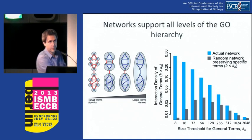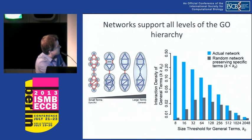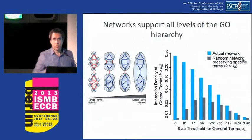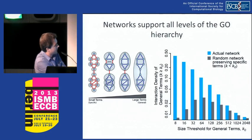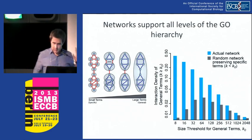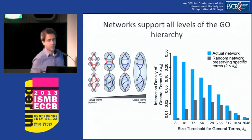What we see is that preserving the smaller terms does preserve some of the density for the larger terms, but not all. We looked at the difference between the observed and the corrected baseline — that's the contributed density at any given level of the ontology. For us, this is evidence that there is considerable, significant interaction density at any level of this hierarchy. This supports the existence of hierarchies embedded in networks that are actually consistent with the Gene Ontology itself.